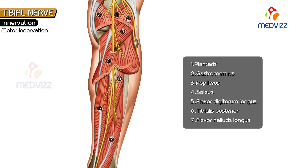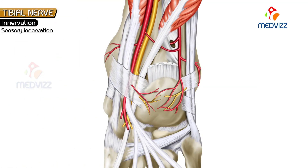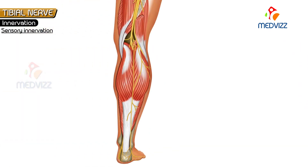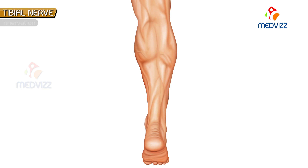For sensory innervation, the medial calcaneal branches pierce the flexor retinaculum and supply the skin of the back and lower surface of the heel. The sural nerve, a branch of the tibial nerve, supplies the skin on the lower lateral part of the leg, the lateral border and adjoining part of the dorsum of the foot, and the lateral side of the little toe.